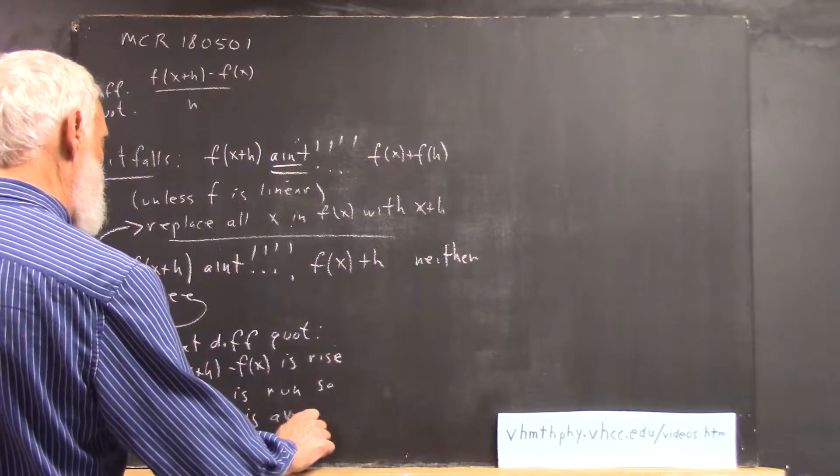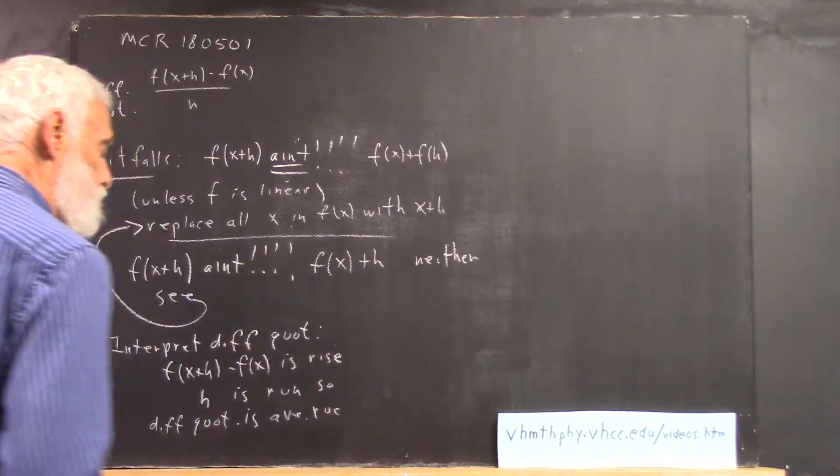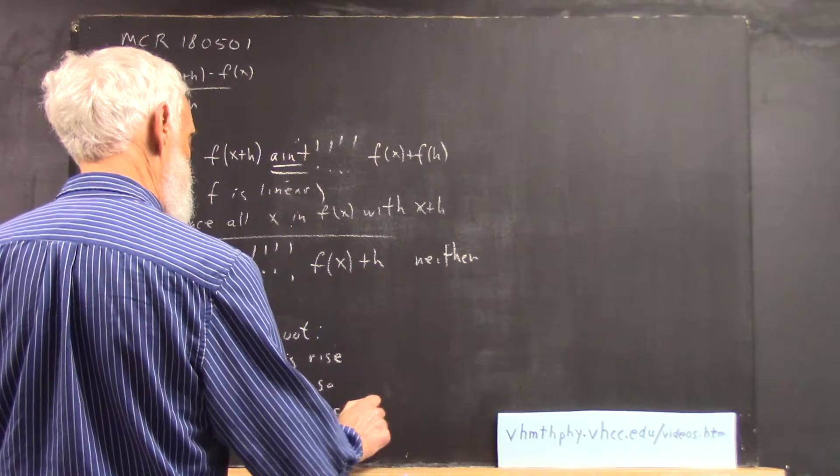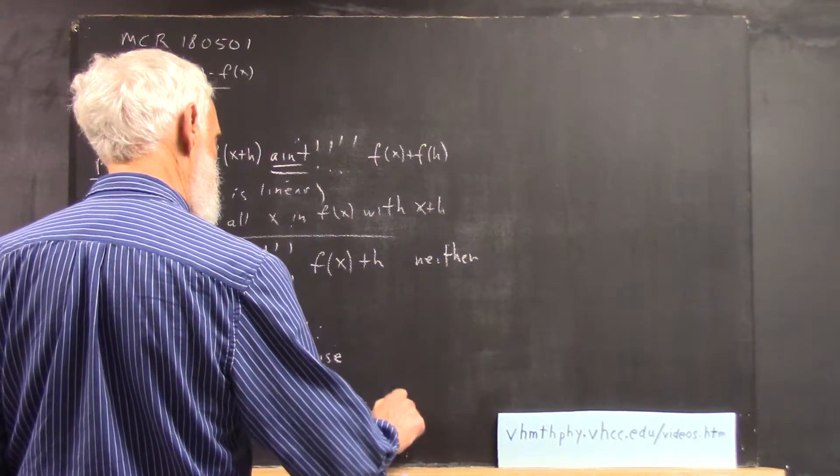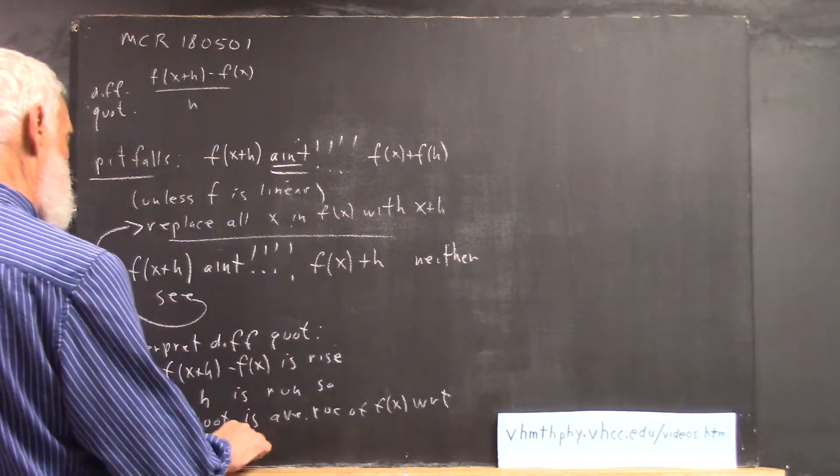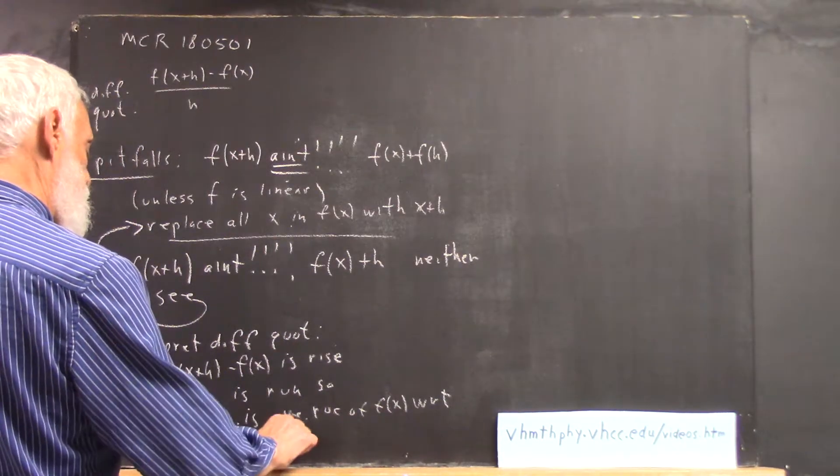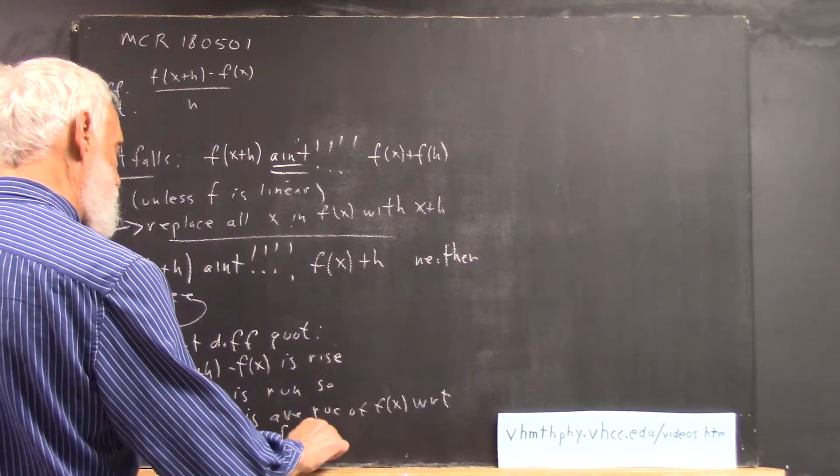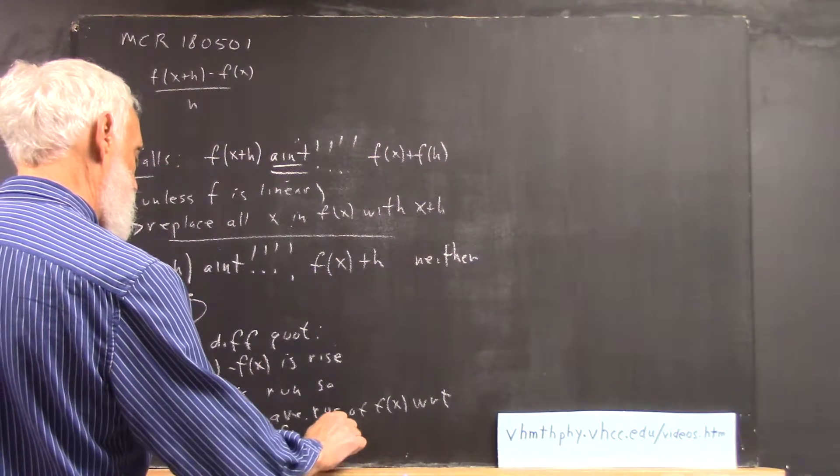So, the difference quotient is the average rate of change of f(x) with respect to x on the interval from x to x plus h.